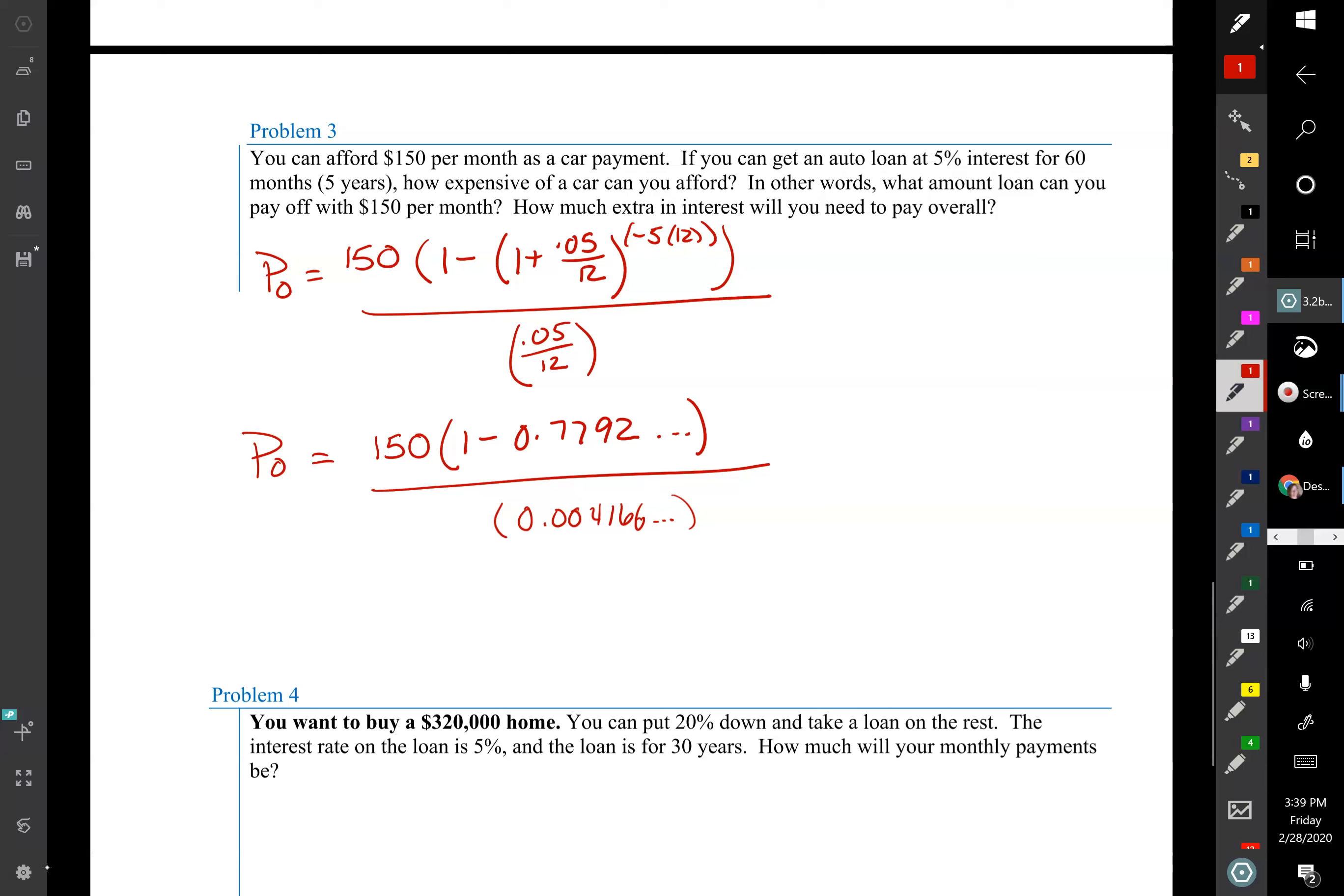Then once I go ahead and find my values for 1 minus 0.7792, I'm going to multiply by 150 and then divide by the parentheses 0.05 divided by 12, and parentheses, and then hit enter. And I will get for my answer that I can afford a $7,948.61 loan.